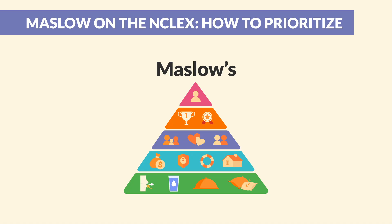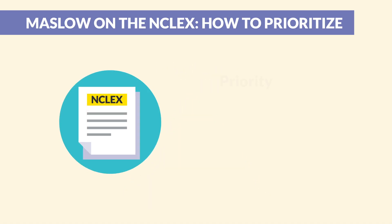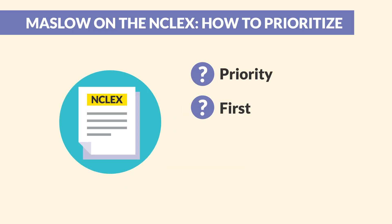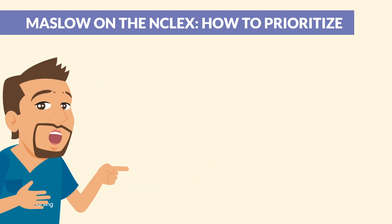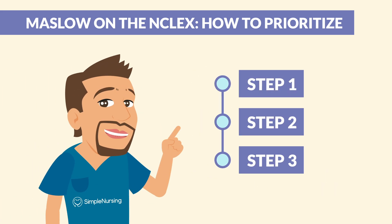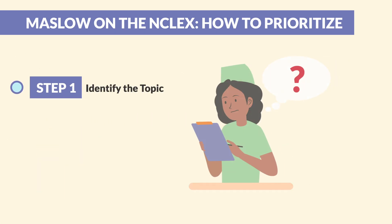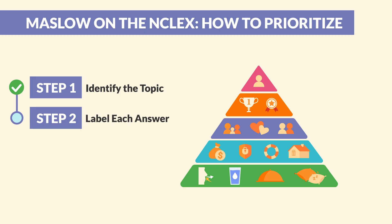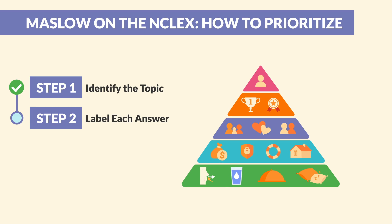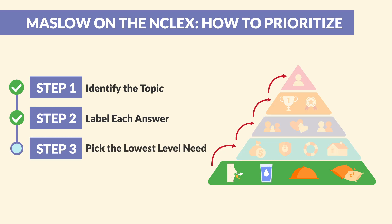Now let's talk about strategy. You'll constantly see NCLEX questions with priority, first, best, or most appropriate. These are always tricky, but here's a simple three-step breakdown. Number one, identify the topic — what is the question really asking? Number two, label each answer, assigning each one to a level of Maslow's pyramid. And finally, number three, pick the lowest level need. Start from the bottom. Always choose physiological needs first, unless safety is at risk.